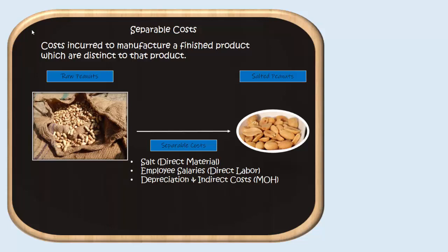Salt. If we have unsalted peanuts and salted peanuts, then the salted peanuts have their own unique direct material in the form of salt. We also need employees to run the salting machines, so we have direct labor as a separable cost, and we have any type of depreciation or other indirect costs incurred to convert those raw peanuts into sellable salted peanuts.